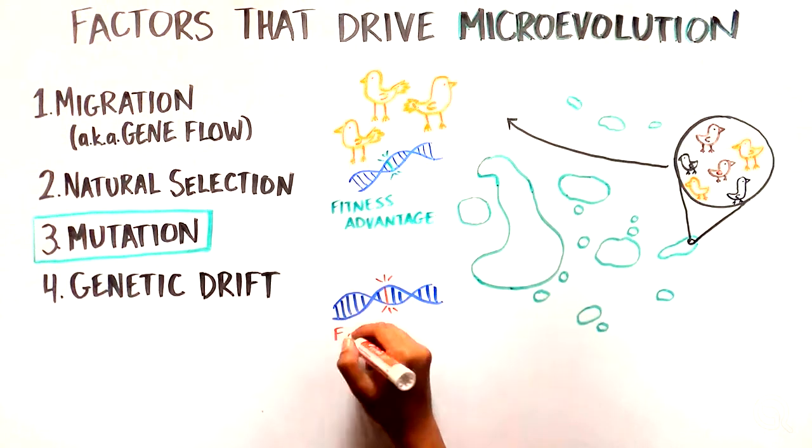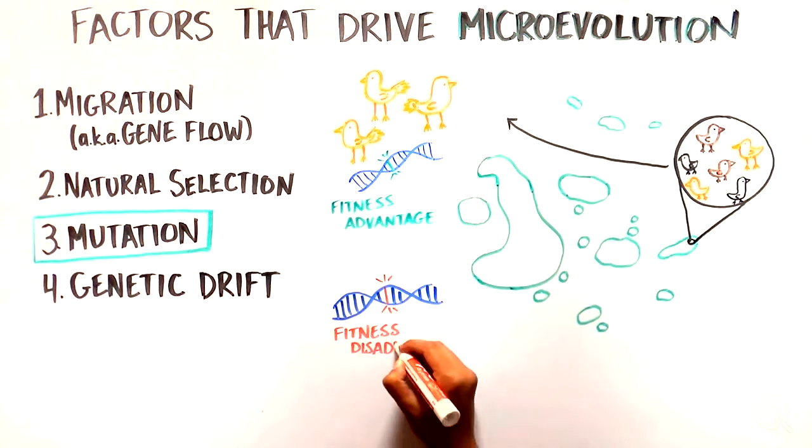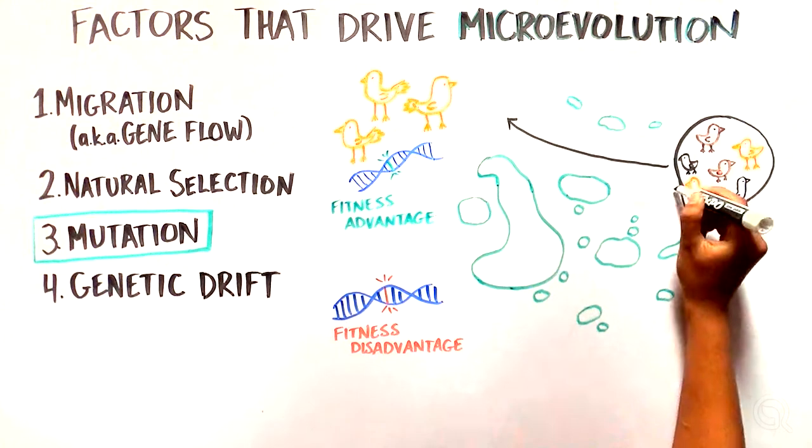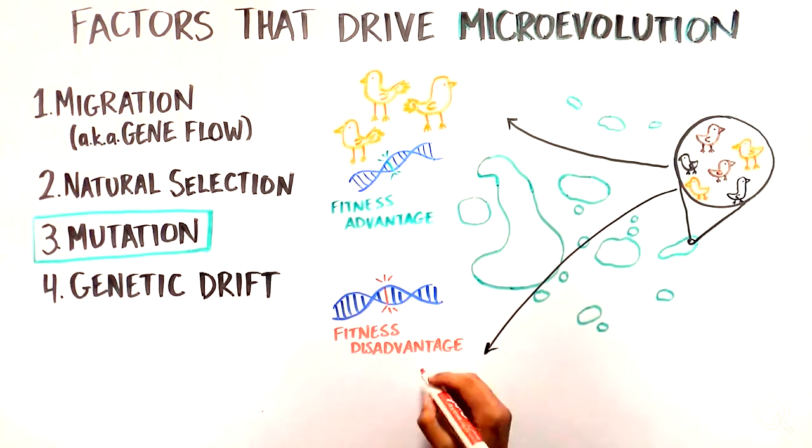If the trait is detrimental to the survival or breeding of an individual within a species, it is unlikely to be passed on. For example, a mutation that led to a brilliant red pigment on the birds might be disadvantageous because it would make those finches more visible to predators.